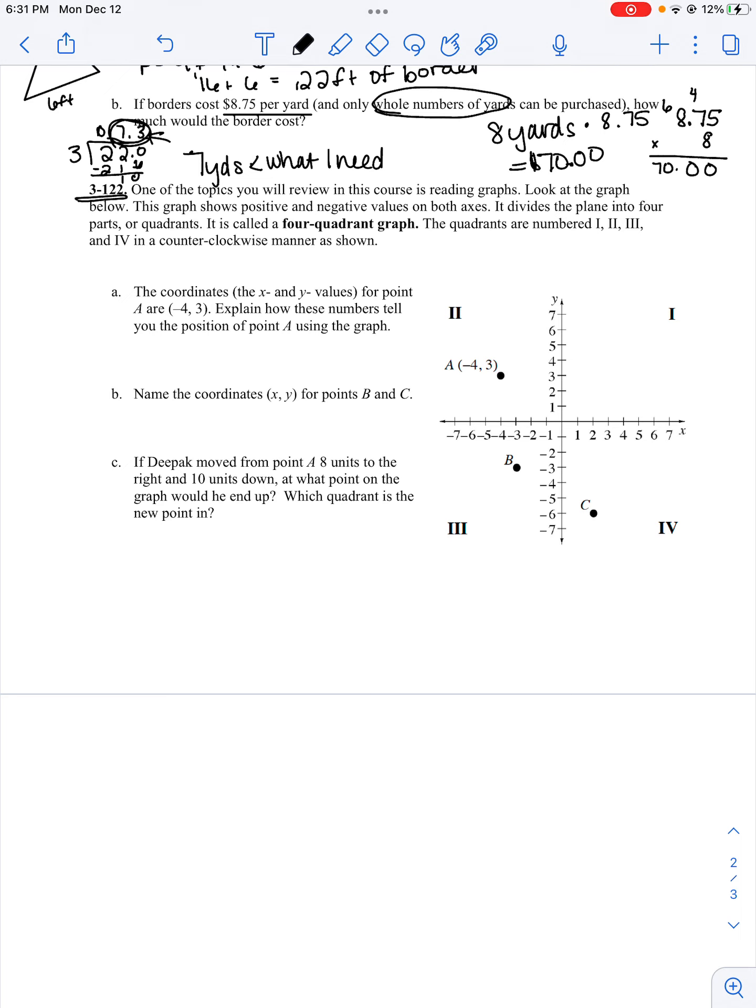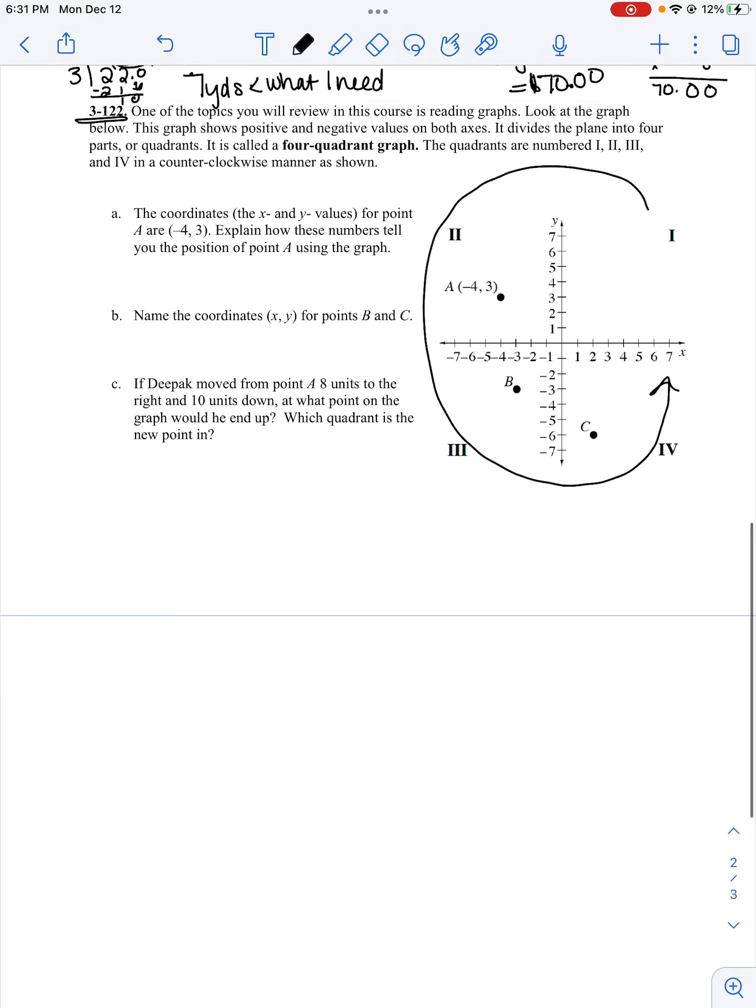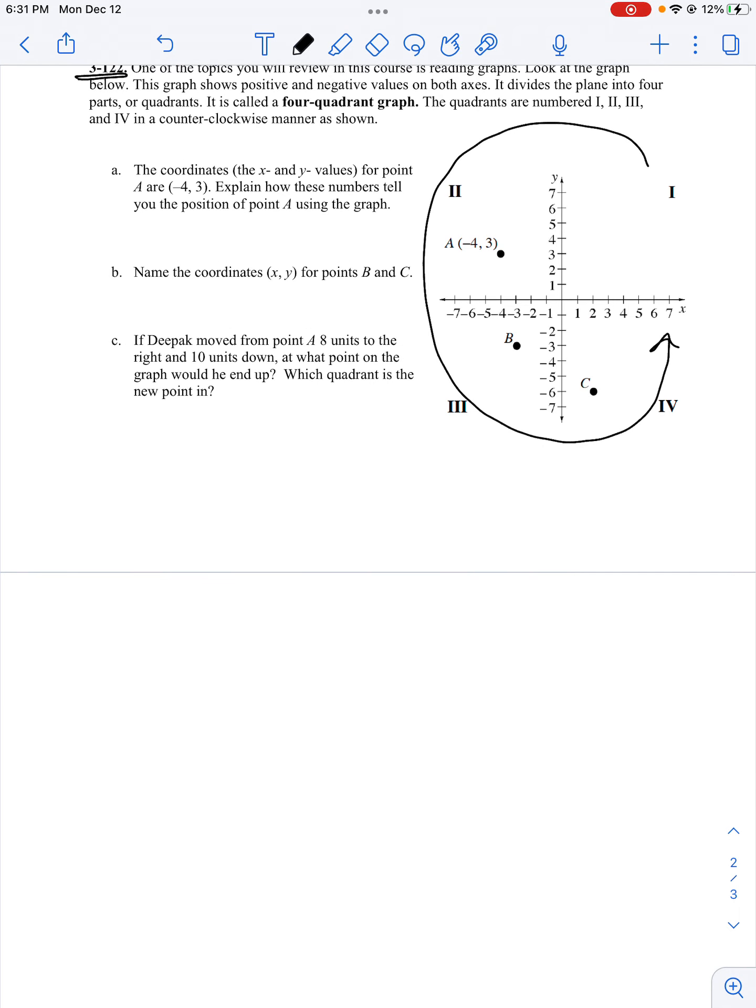Problem 122: One of the topics you will review in this course is reading graphs. Look at the graph below. This graph shows positive and negative values on both axes. It divides the plane into four parts, or quadrants. It is called a four-quadrant graph. The quadrants are numbered 1, 2, 3, and 4 in a counterclockwise manner as shown.